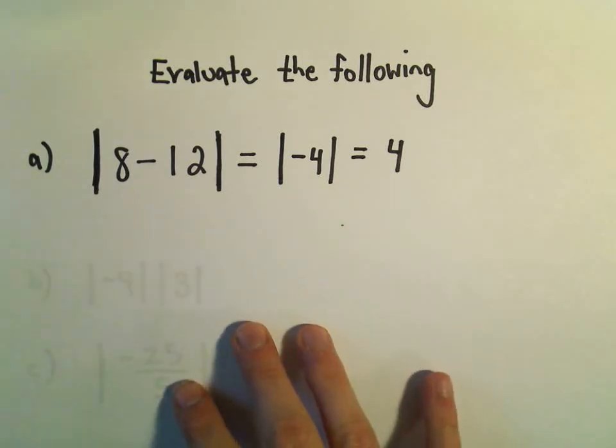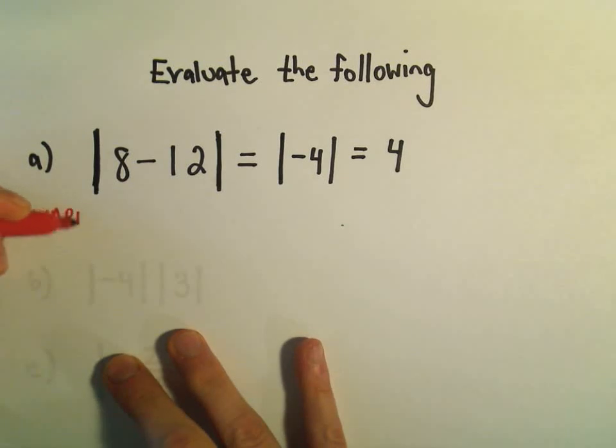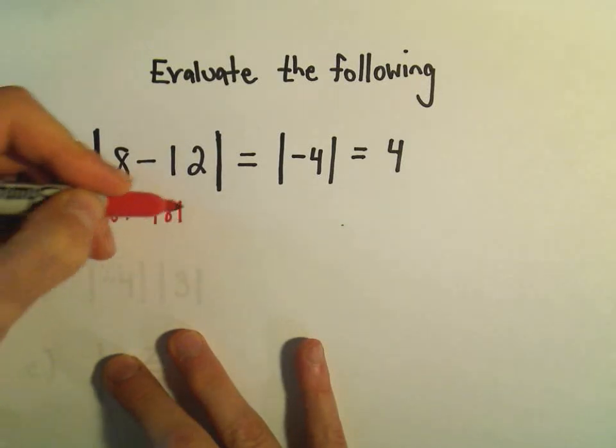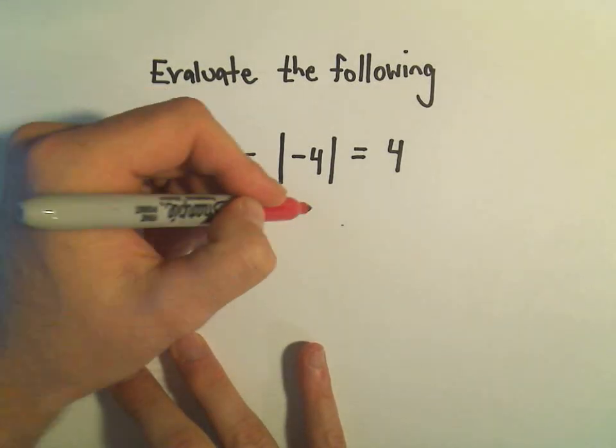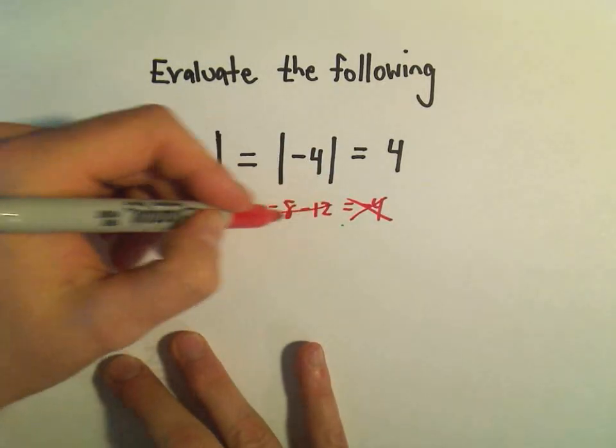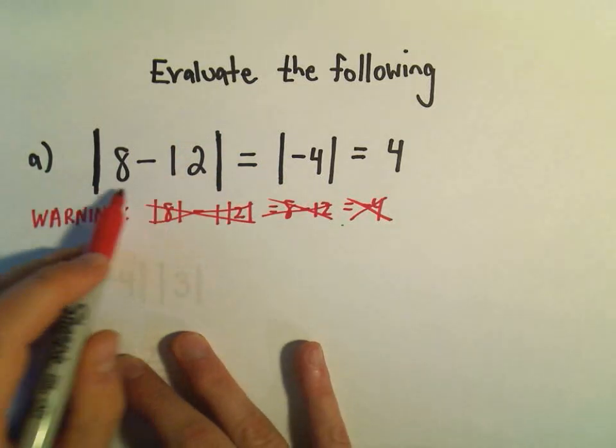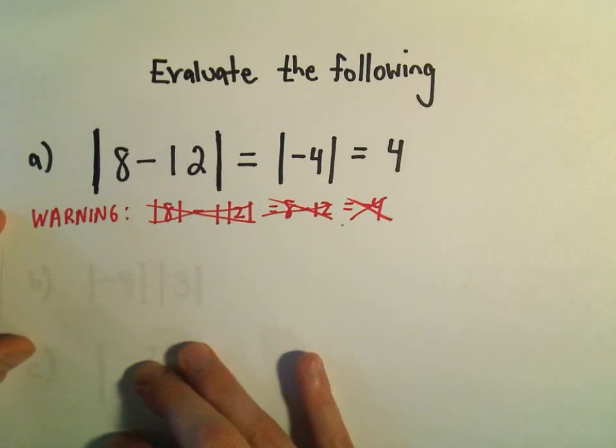And again, be careful, because one of the classic mistakes, you don't want to do this, it would be easy to make this the absolute value of 8 minus the absolute value of 12, which would be 8 minus 12, which would be negative 4, which is not correct. Okay, so do not do any of these steps here in red. You can't break up the absolute value when you're adding and subtracting. You have to be real careful about that. Just a little word of warning, I'm sure I've done it myself more than once.